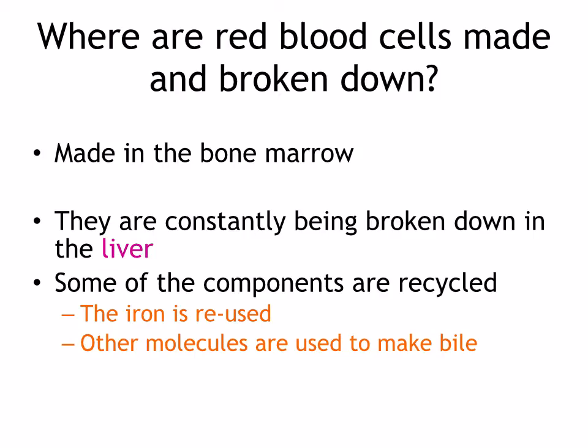Red blood cells are made in the bone marrow and they're constantly being broken down in the liver. Some of the components are recycled — the iron is reused and other molecules are used to make bile.